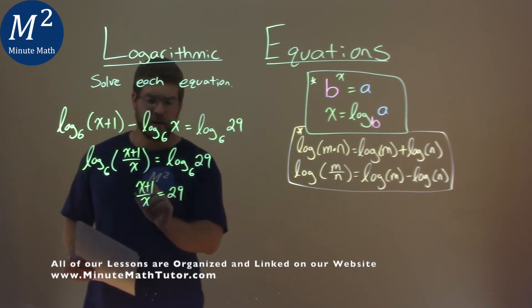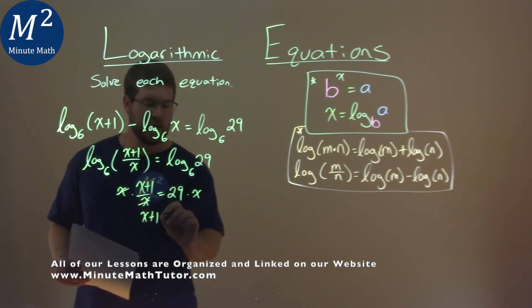Now we just solve for x. Multiply x on both sides and x plus 1 now, this cancels, is equal to 29x.